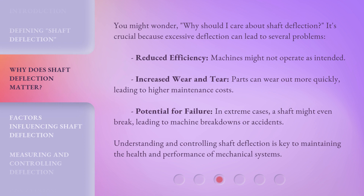You might wonder: why should I care about shaft deflection? It's crucial because excessive deflection can lead to several problems: reduced efficiency — machines might not operate as intended; increased wear and tear — parts can wear out more quickly, leading to higher maintenance costs; and potential for failure — in extreme cases, a shaft might even break, leading to machine breakdowns or accidents. Understanding and controlling shaft deflection is key to maintaining the health and performance of mechanical systems.